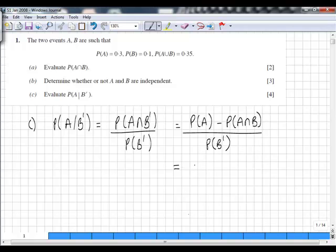We have pretty much all that information. The probability of A is 0.3, A and B is 0.05, and B dash is 1 take away the probability of B, so it's 1 minus 0.1. You can put that information to the calculator.